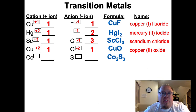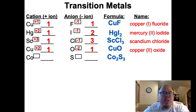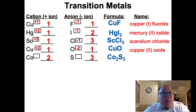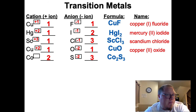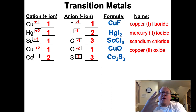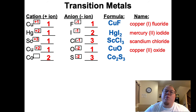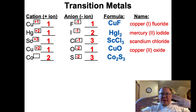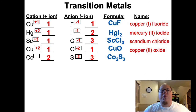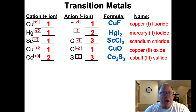Next one: cobalt and sulfur - Co2S3. So cobalt sulfide, but we have a ratio of 2 to 3. What's the charge on cobalt? The ratio is 2 to 3 and sulfur, if we look it up, is a negative 2. So sulfur is negative 2, and negative 2 and negative 2 and another negative 2 makes negative 6 total. The cobalt has to equal positive 6 and there are only two of them - positive 6 divided by 2 means each cobalt has to be a positive 3. So the charge on cobalt is positive 3, and this would be cobalt 3 sulfide.